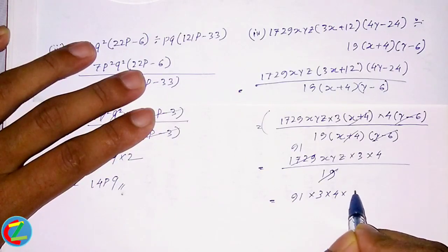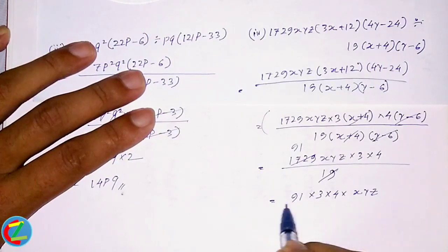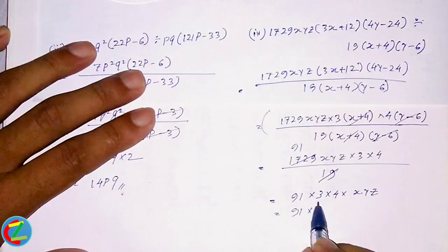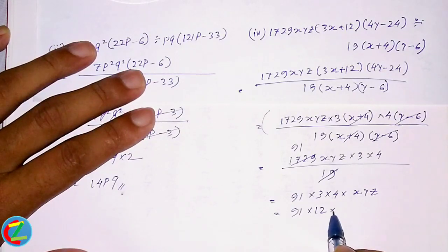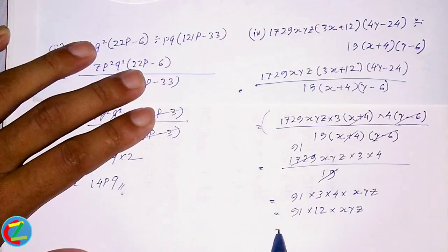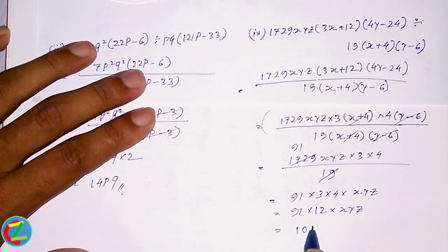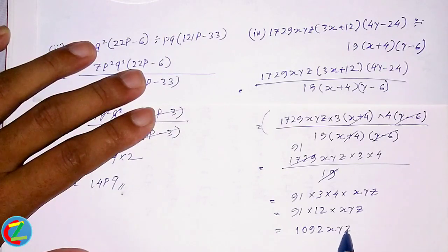91 x 3 x 4 x YZ, that is 91 x 12 x YZ, ultimately 1092 XYZ.